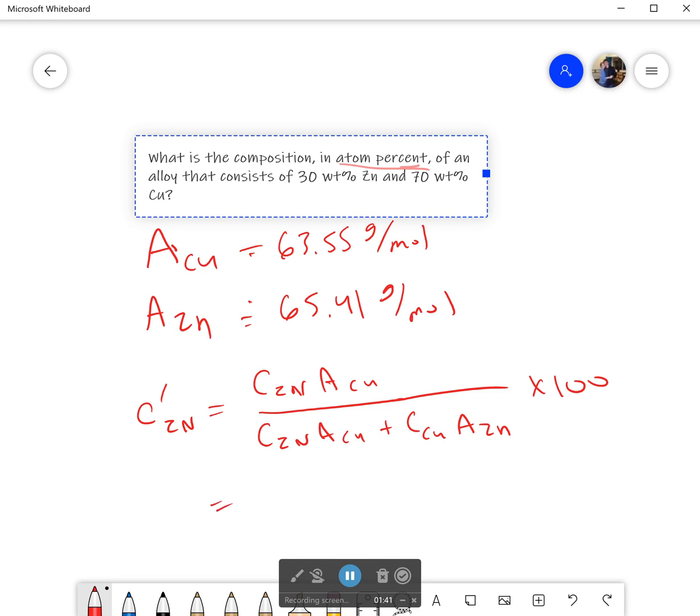If I plug things in, what I get is 30—yes, this is in percentage here—times 63.55 grams per mole, all over 30 times 63.55 grams per mole plus 70 times 65.41 grams per mole.